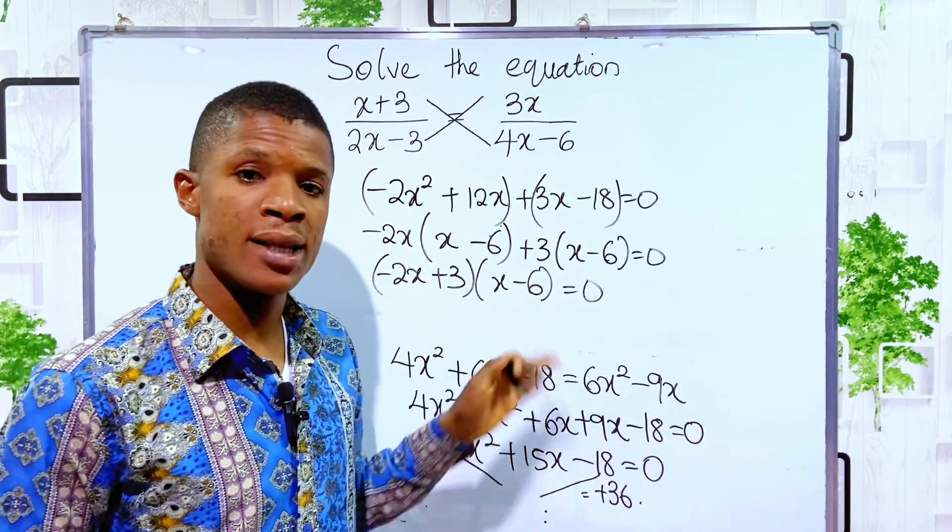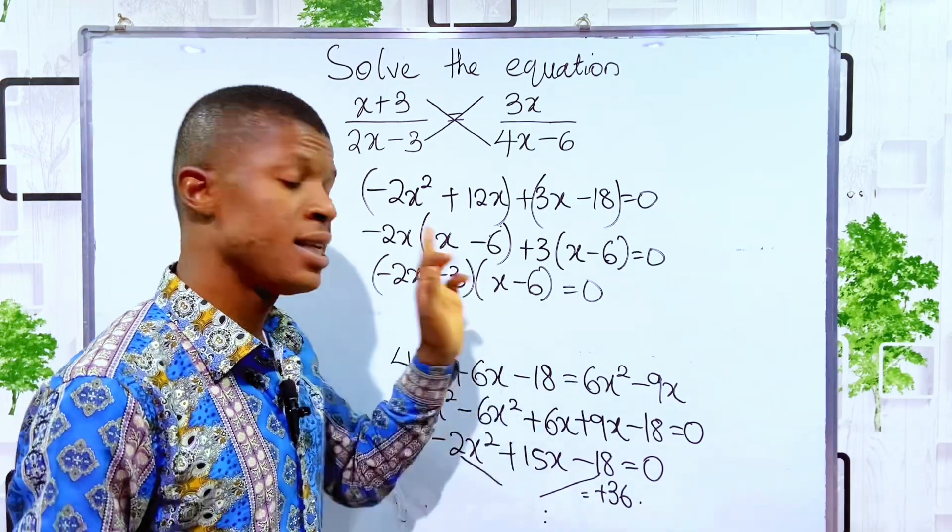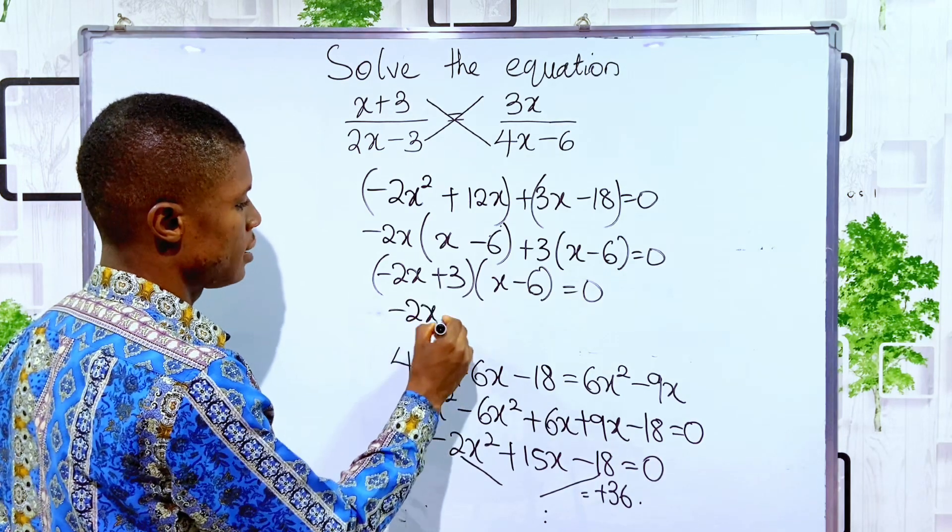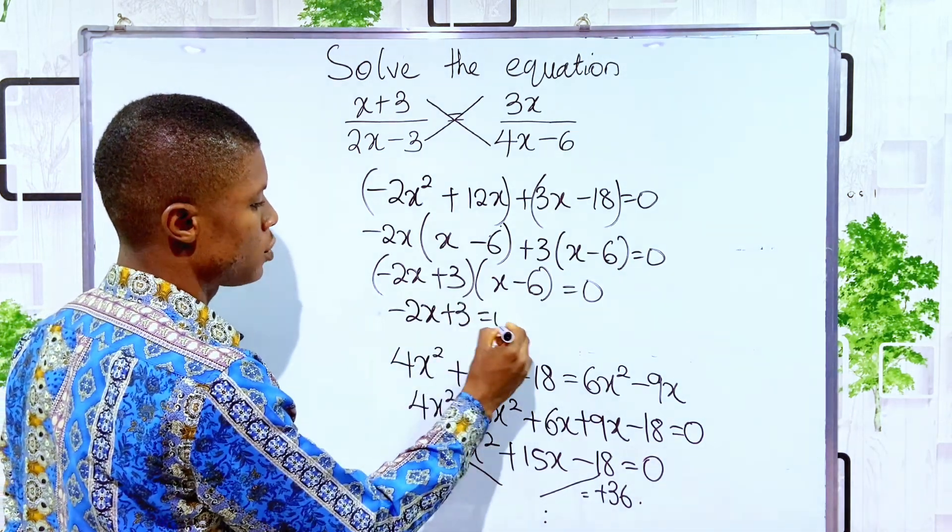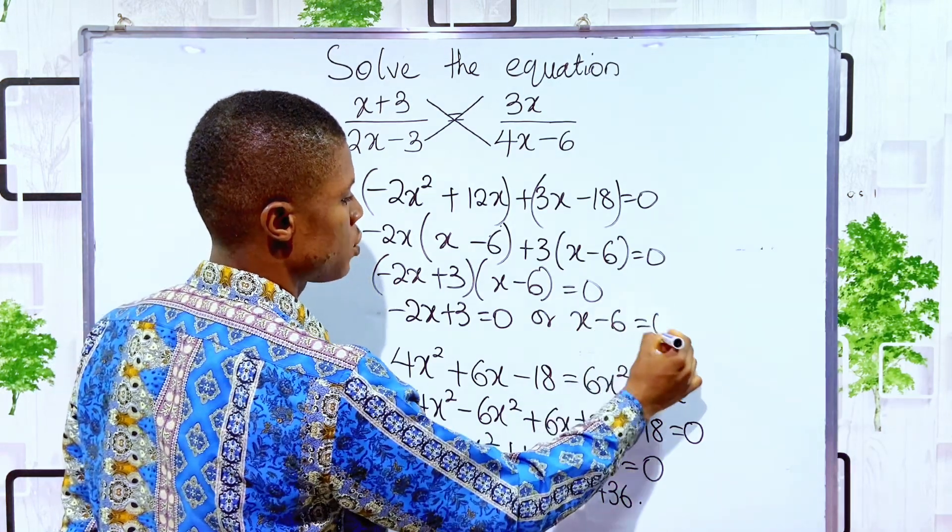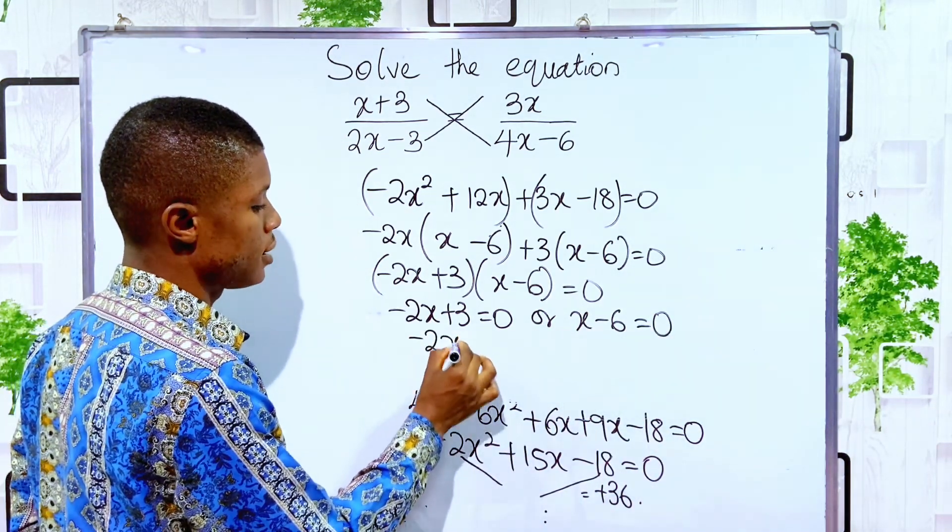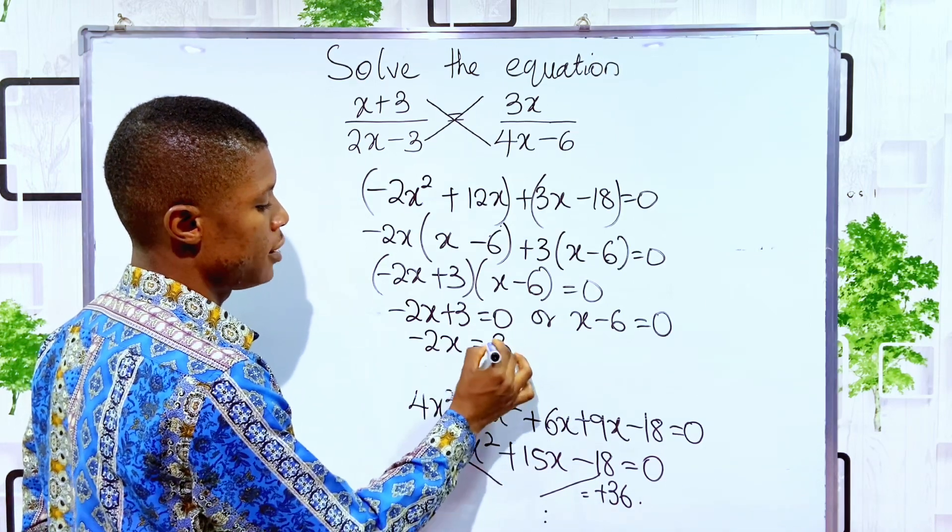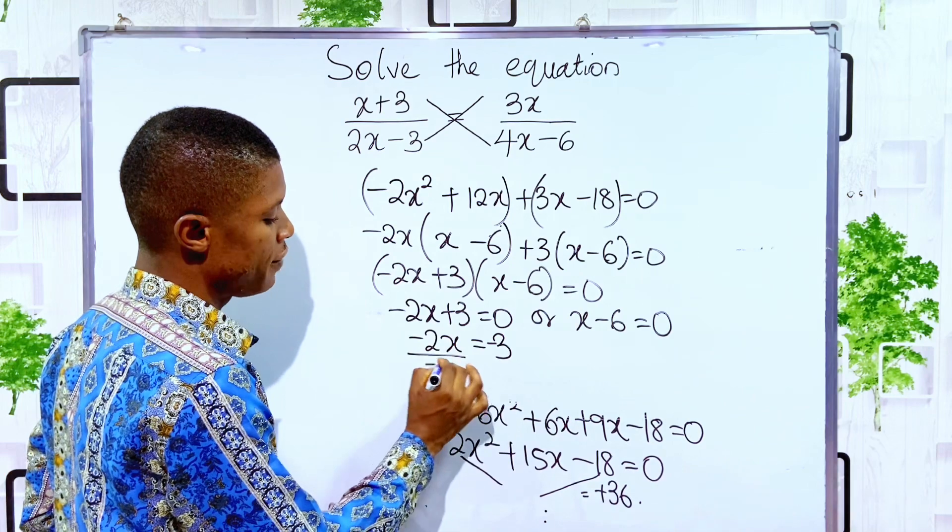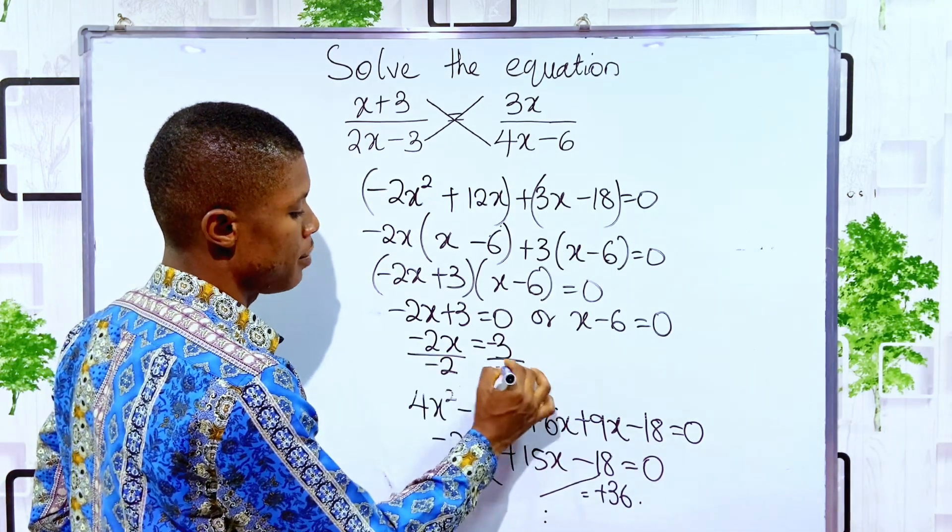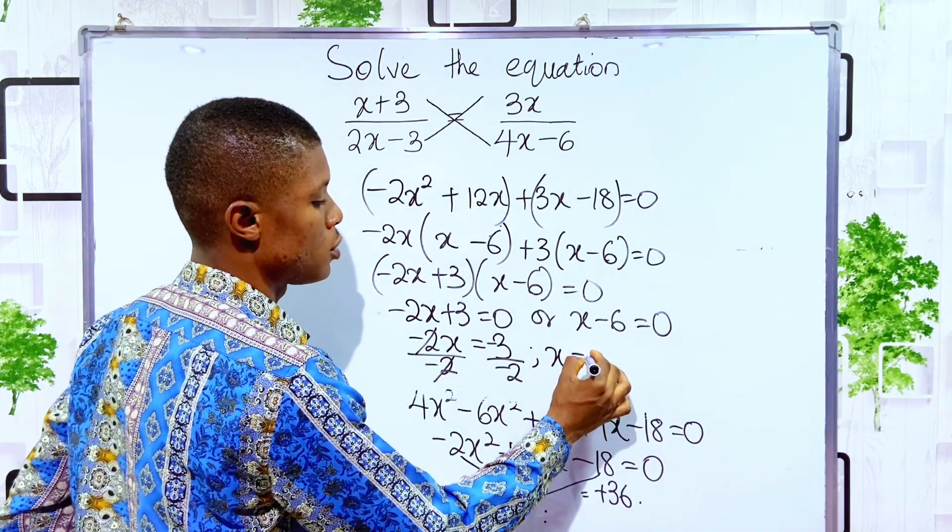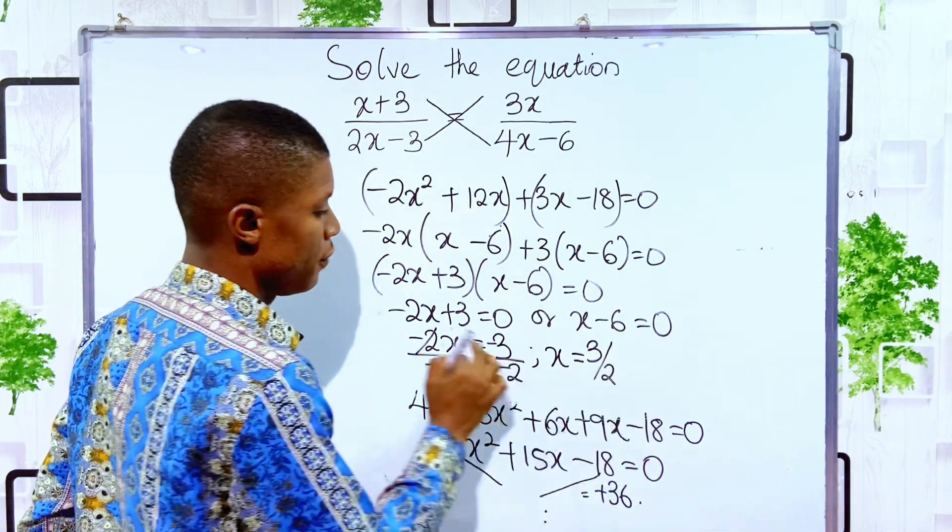Since these two brackets multiply to give 0, meaning that one of them is 0 or both of them are 0s. Minus 2x plus 3 is equal to 0. Or, x minus 6 is equal to 0. We have minus 2x is equal to minus 3. 3 crosses the quality sign. We divide by minus 2 and divide by minus 2. If we divide by minus 2, you see that x is equal to 3 over 2 for this one.